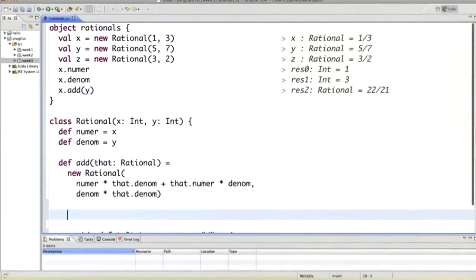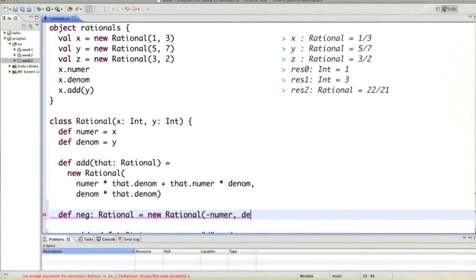So the first thing we need to do is define the function neg. So neg should have a result type Rational. And what we would do is return a new Rational with the numerator negated and the denominator as it is before.